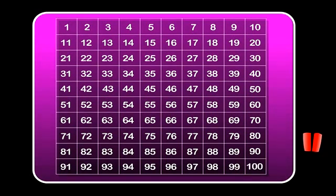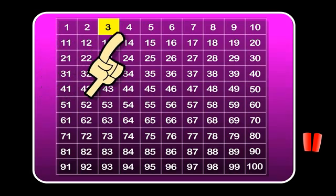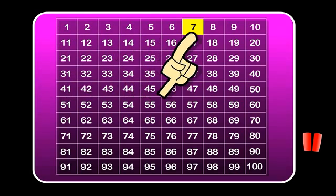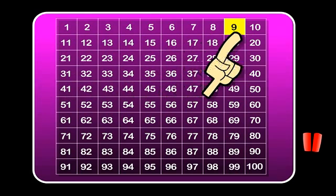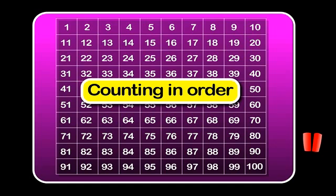If we count to 10 — 1, 2, 3, 4, 5, 6, 7, 8, 9, 10 — we are counting in order.